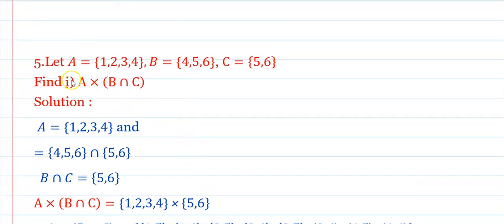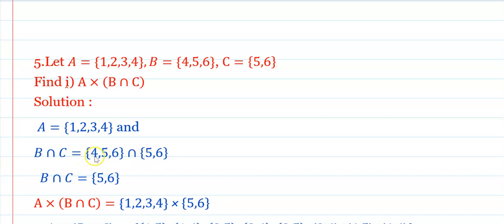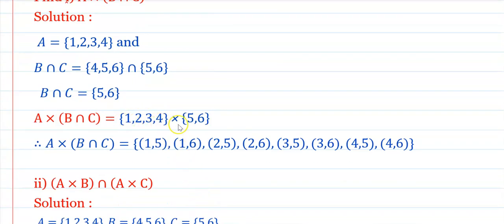Question 4: Let A = {1,2,3,4}, B = {4,5,6}, C = {5,6}. Find A × (B ∩ C). B ∩ C = {5,6}. So A × (B ∩ C) = {1,2,3,4} × {5,6} = {(1,5),(1,6),(2,5),(2,6),(3,5),(3,6),(4,5),(4,6)}.